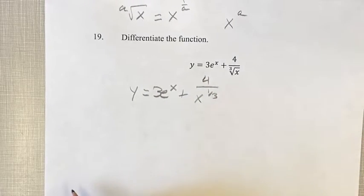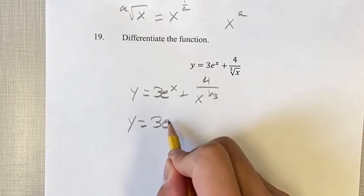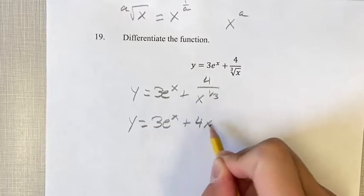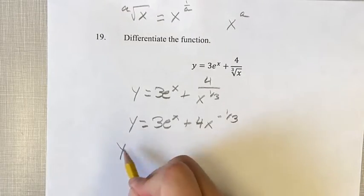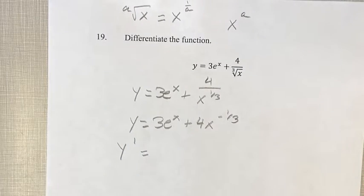Now we need to bring it to the numerator, which means we're going to multiply the exponent by negative 1. So we have x^(-1/3). Now this is something we can derive. y prime, our derivative, is going to be.